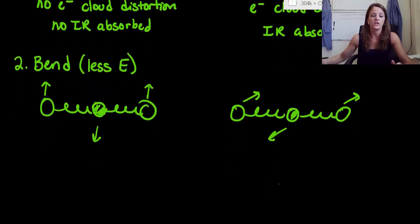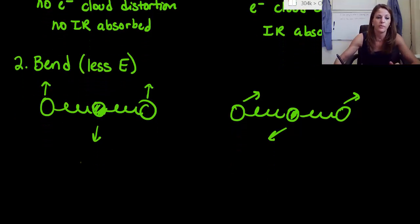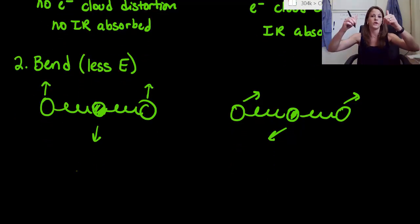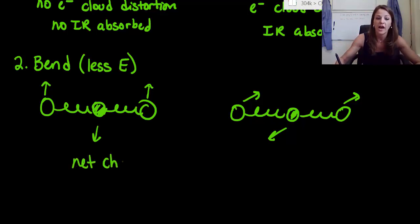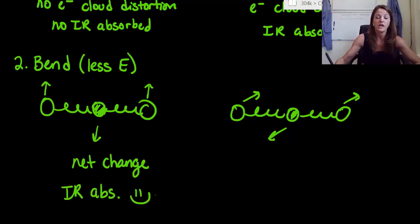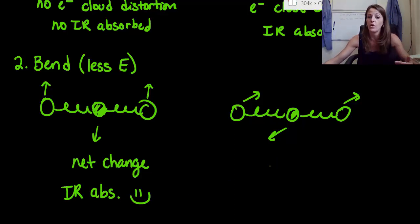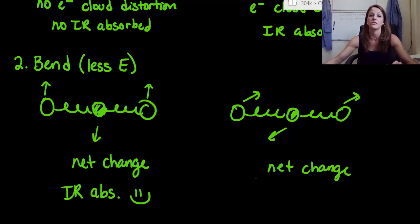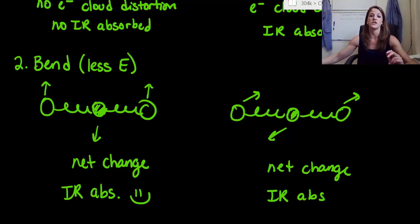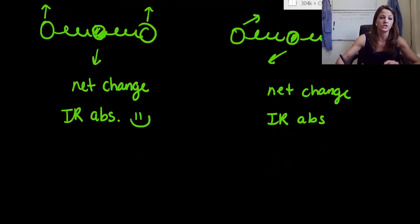For the first bend where we're going up and down, we see two going up and one going down — two is greater than one, so there's definitely a net change. That means we have an electron cloud distortion, which means we have IR being absorbed. For the other bend — into the page, out of the page — two is greater than one, there's definitely a net change and electron cloud distortion, which means we definitely have IR absorption.